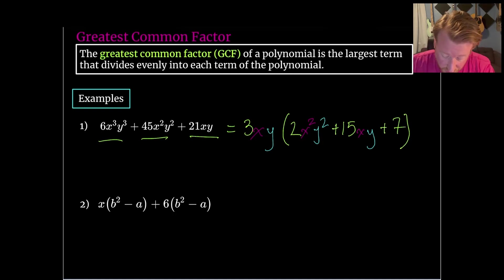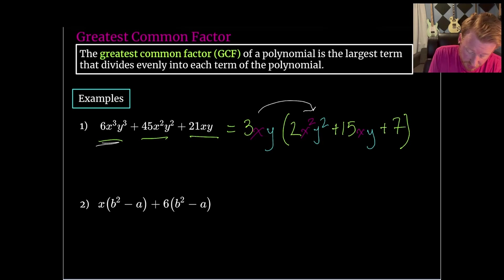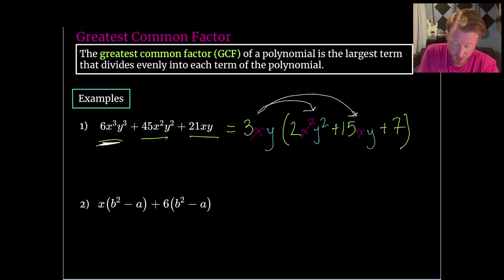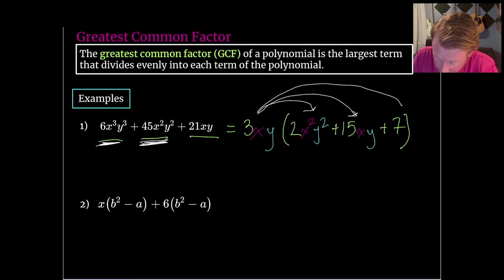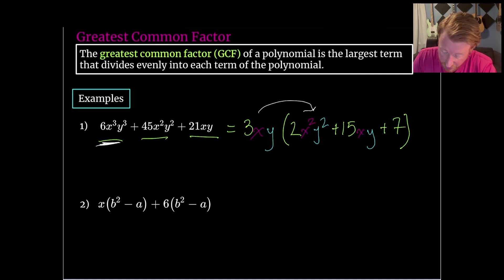What's going to be left behind is y², then just a single y, and then that is it. So we'll close that off. The way we can check our work is simply by multiplying back inside and making sure we get what we started with. Multiplying back gives us 6x³y³; in the middle, 3×15=45, x×x=x², and y×y=y², which gets us back to the second term; and then 3×7=21, giving us the last xy term. So we're feeling good about that one.